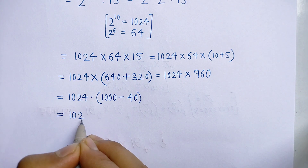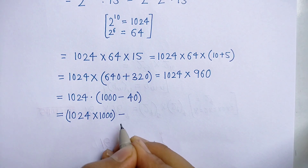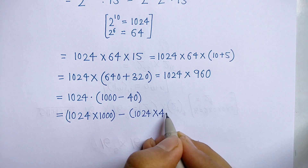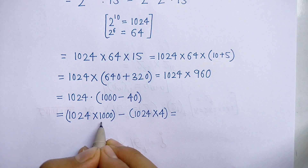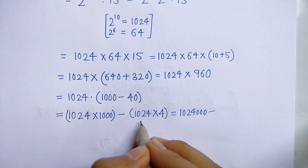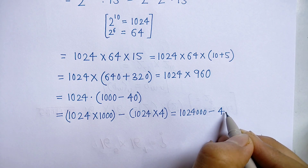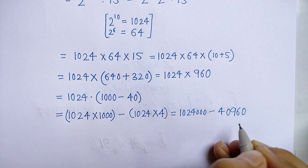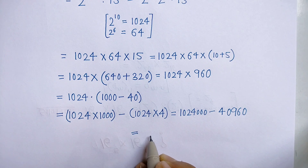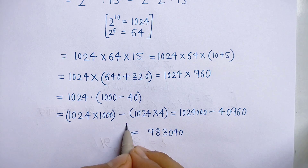So we have 1024 into 960. We can write 960 as 1000 minus 40. This equals 1024 into 1000 minus 1024 into 40. That gives us 1,024,000 minus 40,960. Subtracting, we get 983,040. This is our final answer.